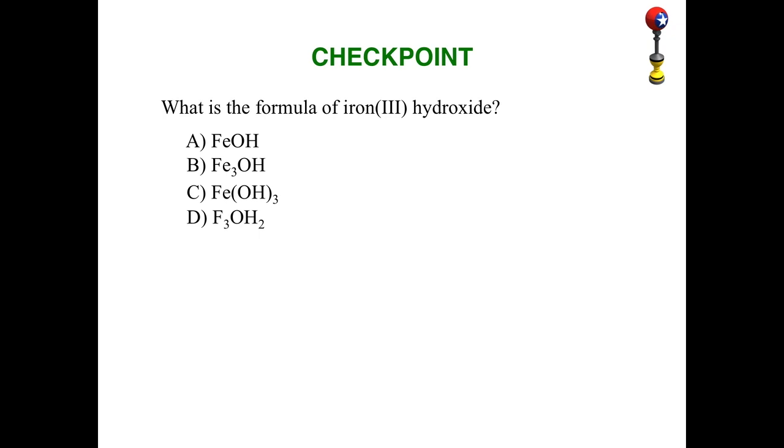All right, let's have a final checkpoint. What is the formula of iron three hydroxide? All right, hopefully you made some progress. First, from the name, we know that it is Fe3+. And you also recognize that hydroxide is a polyatomic ion, OH-1. So if each OH is minus one, you would need three of the OHs. You need three of the hydroxides to cancel out your one iron.